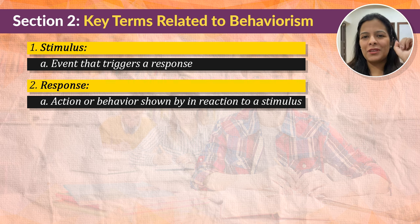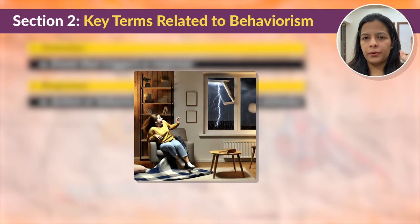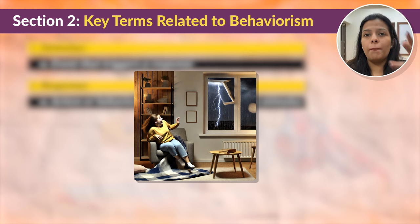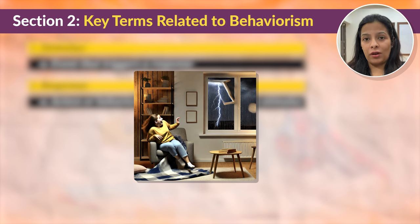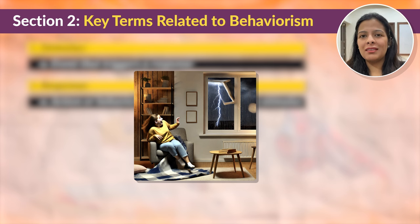Let me give you an example. Suppose you hear a very loud thunderclap while you are sitting at home. You immediately feel very startled and jump out of your chair. Now here, the loud noise that you hear acts as a stimulus, and your reflex of jumping from the chair is the response to that noise. So the stimulus was triggered, and how you reacted — that is the response.